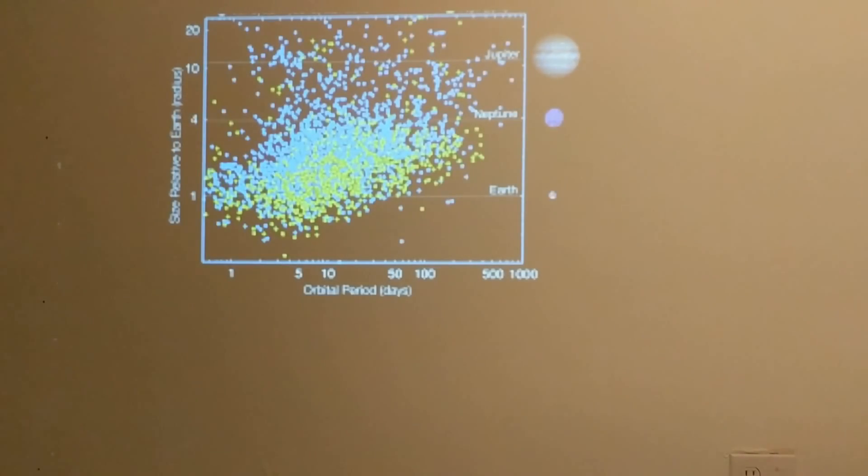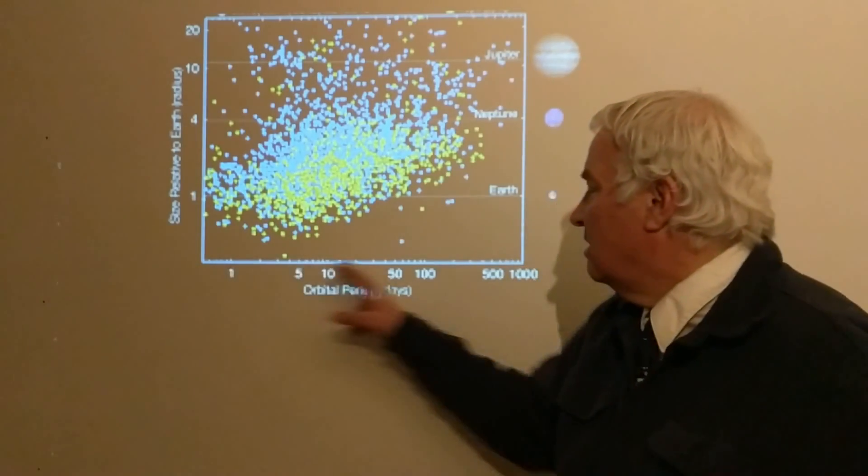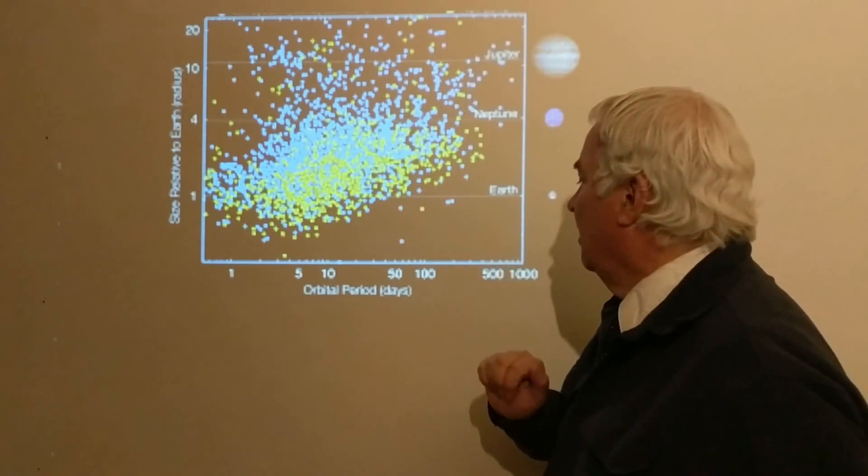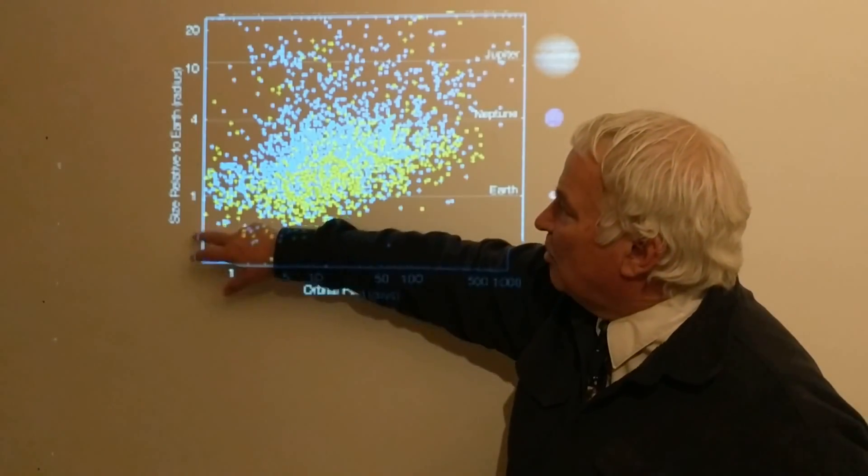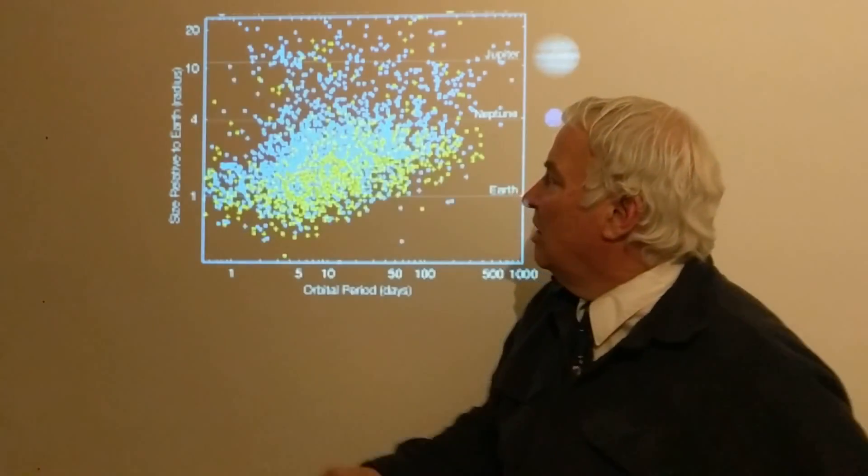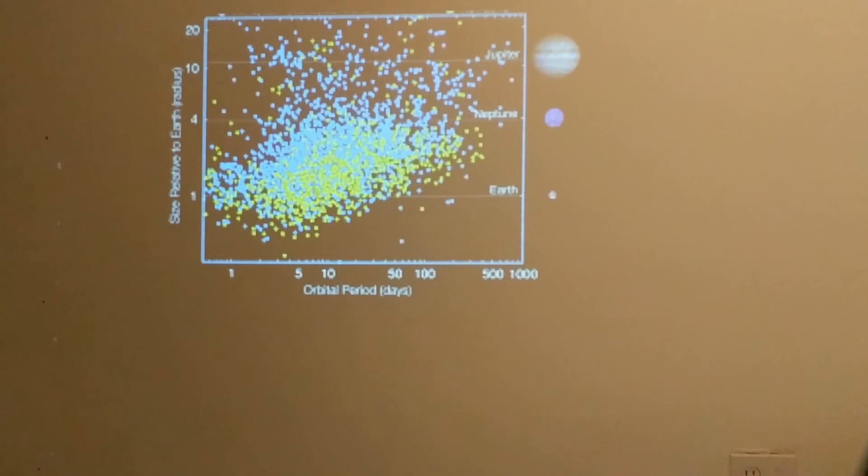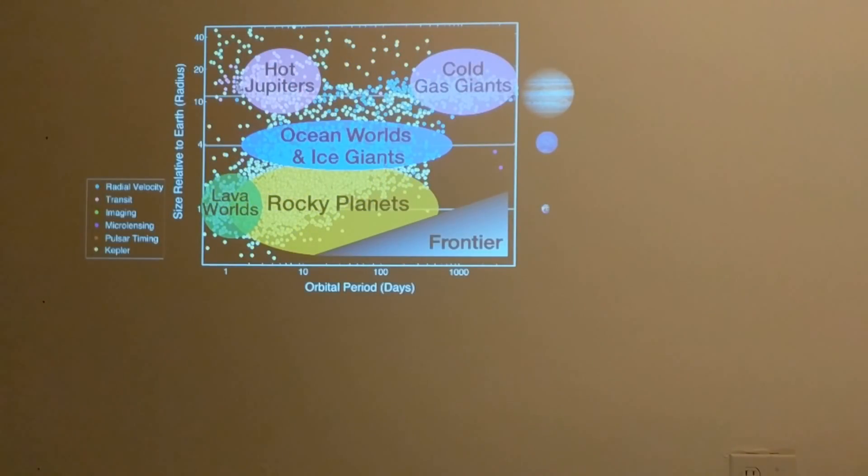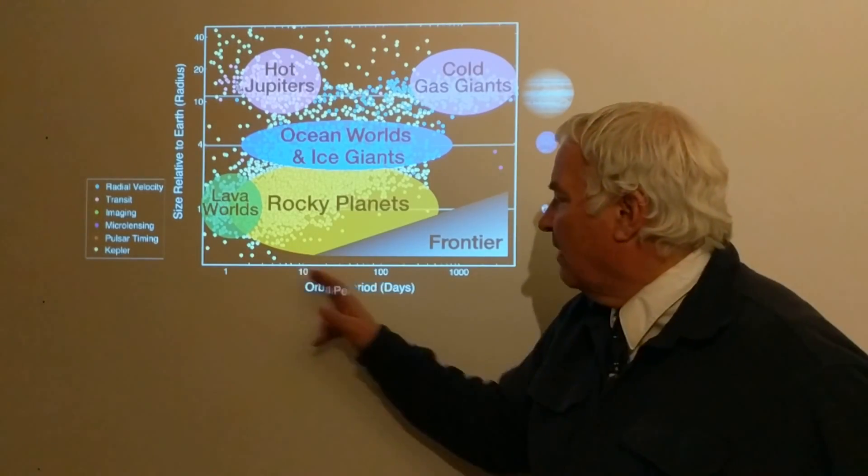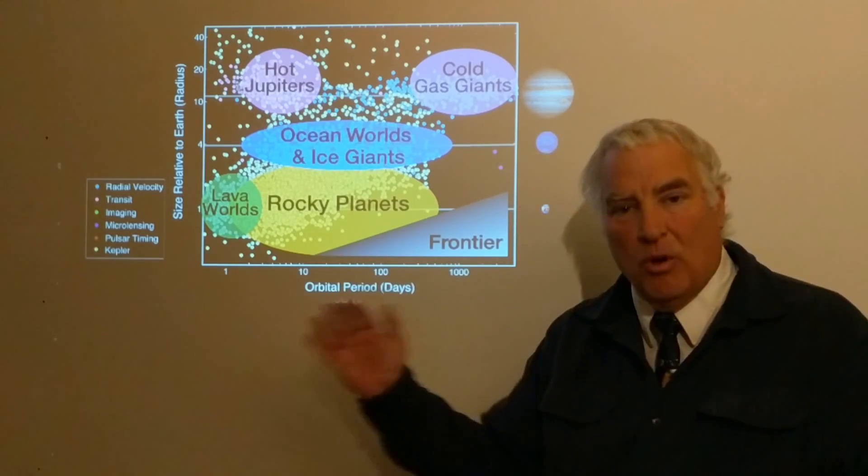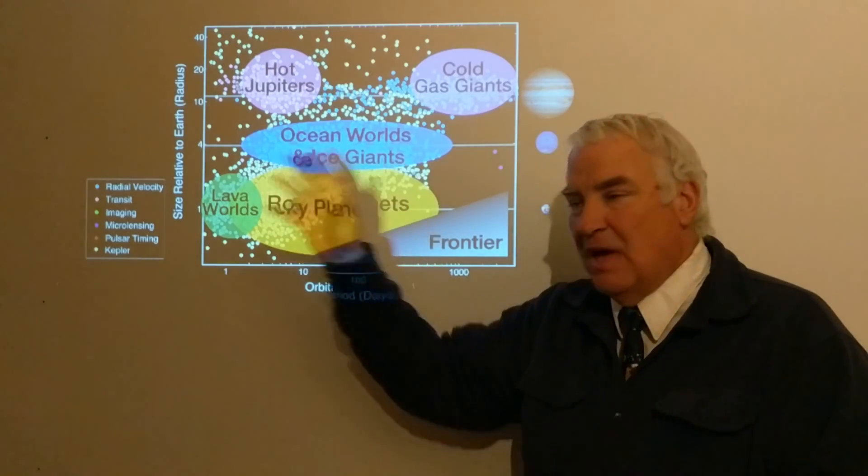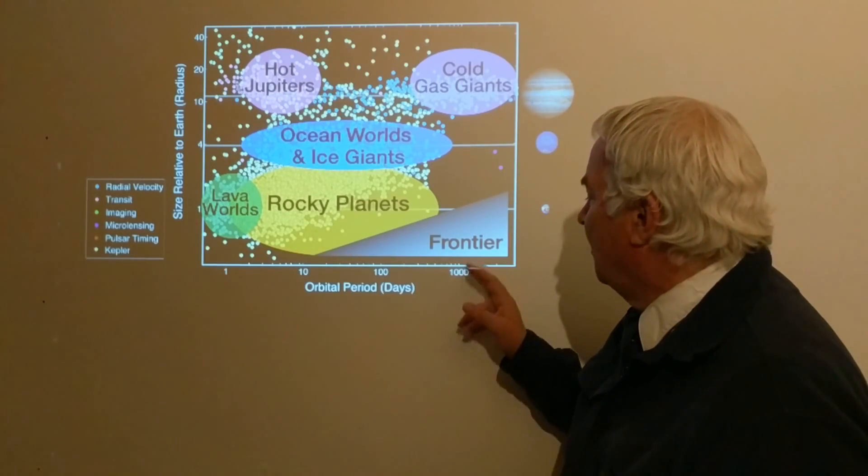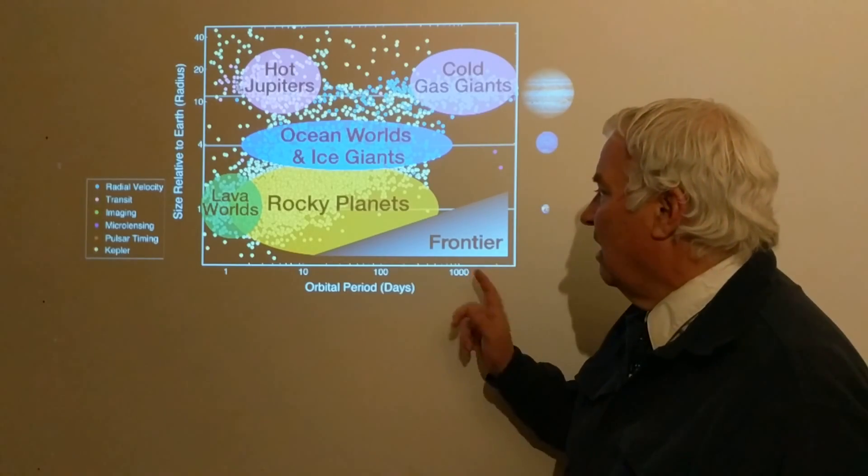To summarize the Kepler observations, we can look at a diagram showing the orbital period in days. The Earth would be out here because the Earth orbits the sun taking 365 days. The size in proportion to Earth—1, 4, 10, and 20—shows that there are lots of Earth-sized planets that have been detected, and these have been broken up into various groups. Kepler could not detect planets with orbital periods that were too long because the mission was only able to observe the Cygnus region for so long, and so orbital periods greater than about a thousand or so days were not detected.